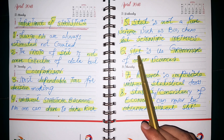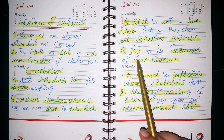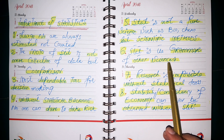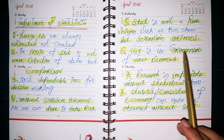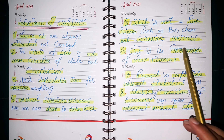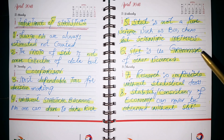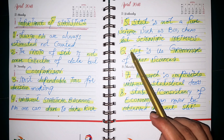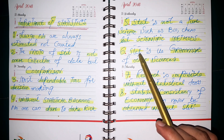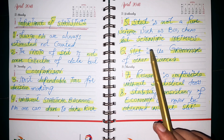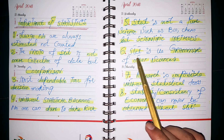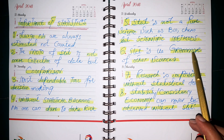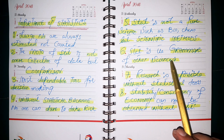Statistics is the grammar of other sciences. जितनी भी दूसरी sciences हैं, उनके अंदर जो discipline है, उसकी maintenance statistics के पास है। इसलिए हम कहते हैं कि statistics is the grammar of other sciences.